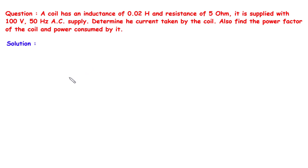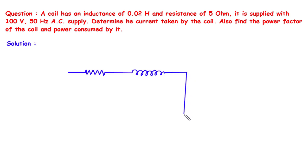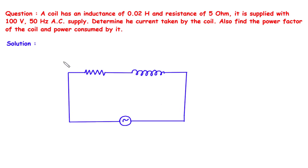First of all, we will draw the circuit. The circuit will be a resistance in series with an inductance. This will be the resistance and this will be the inductance. The supply will be 100V 50Hz AC supply. The value of resistance is 5 Ohm and the value of inductance is 0.02 Henry.